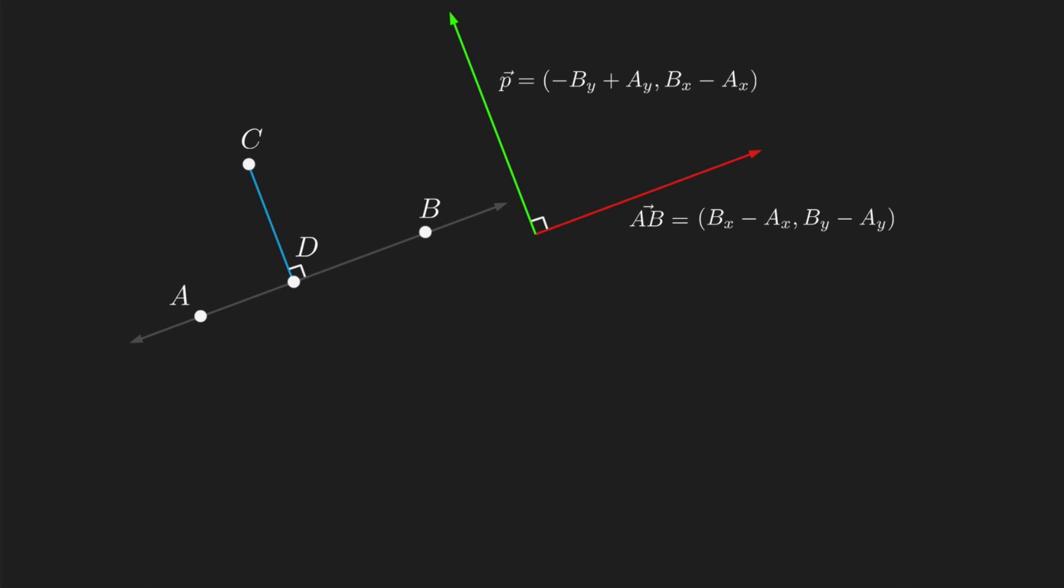I am now going to calculate the vector AC, which of course is just Cx minus Ax, Cy minus Ay. I'll then label the angle between AC and CD as theta.